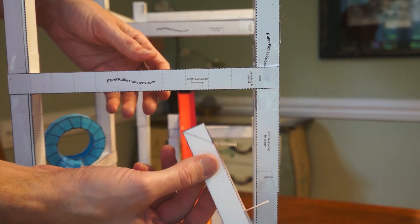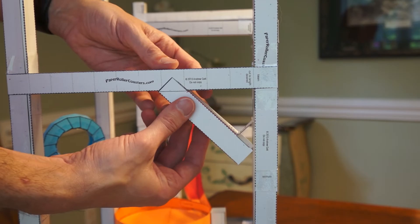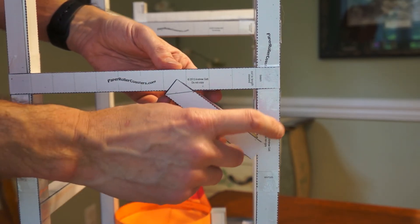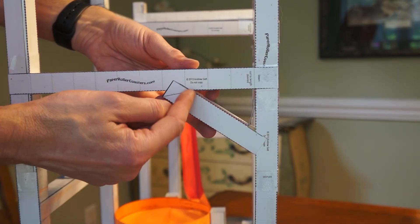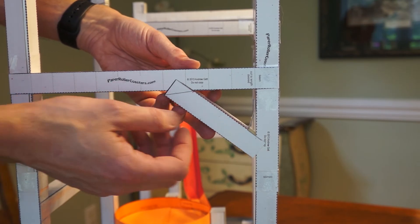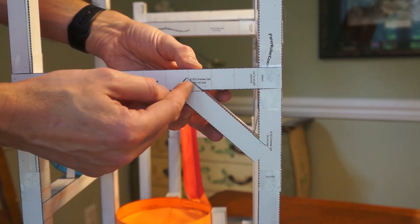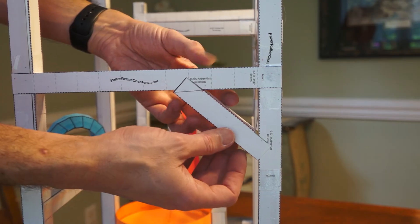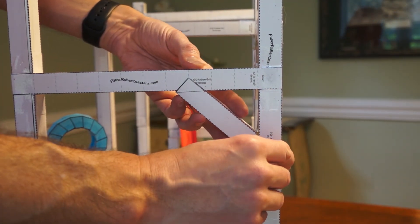I'm going to tape this diagonal support to the underside of this beam and this column right here. Even though I didn't trace along this line, it still comes in handy because I want to make sure that it's parallel and right up against this edge of the beam before I tape it on.